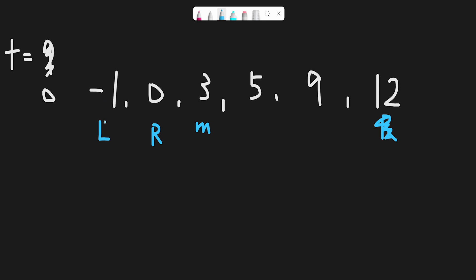Now 0 plus 1 divided by 2 is 0, so the middle pointer is here. We check the two numbers: 0 versus minus 1. Since 0 is bigger than minus 1, we move the left pointer to middle plus 1. Now left pointer and right pointer are both at index 1. So 1 plus 1 divided by 2 is 1, middle pointer is also index 1. We compare the two numbers and they are the same, so we return 1. That is our basic idea to solve this question.